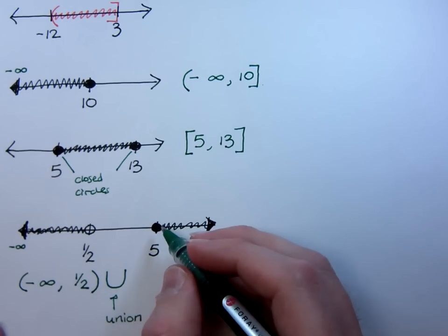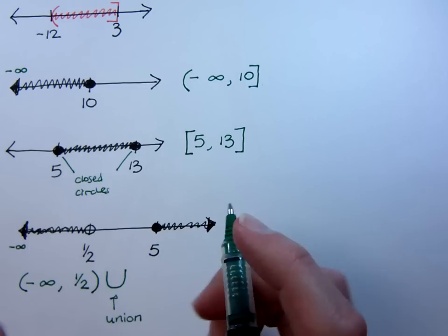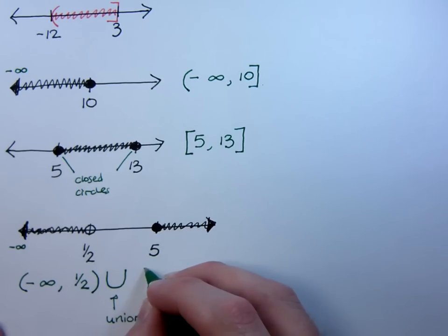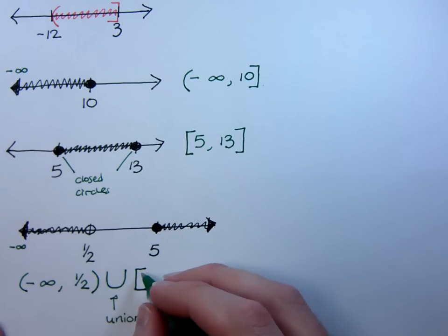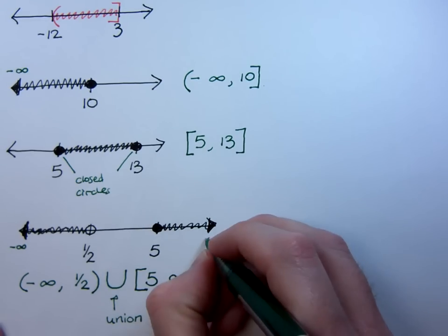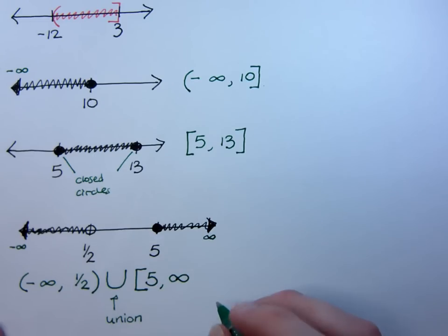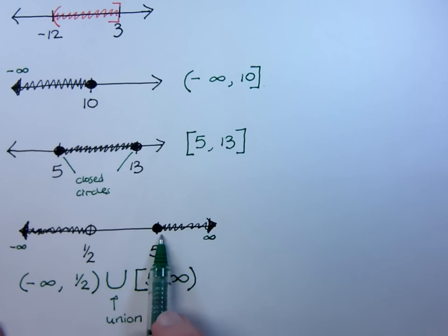And then on the other side, so I'm using the union symbol to join, to kind of bridge the gap here. I'm going to pick back up with 5. Since it is included, it's filled in, I'm going to use a bracket. So I'll start at 5. I'm going to keep going out to the right to infinity. Remember, out to the right you're heading towards positive infinity. I'm going to put parentheses around that. So the only thing here that even has a bracket is going to be the 5, and the reason for that is because it's colored in, it's filled in, is included.